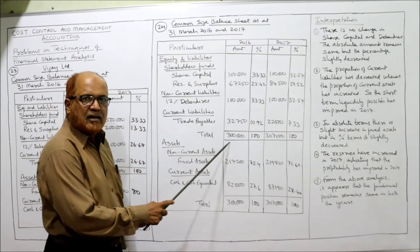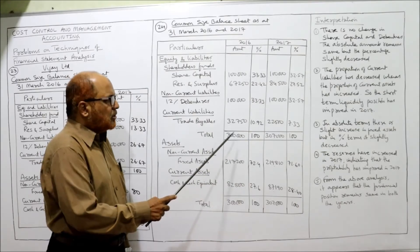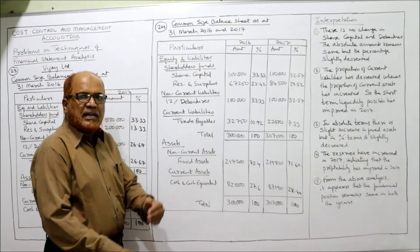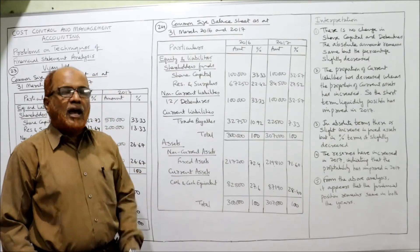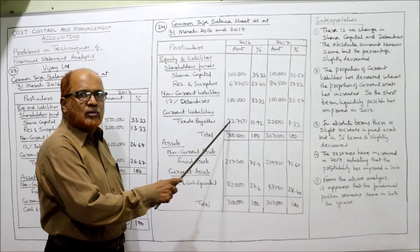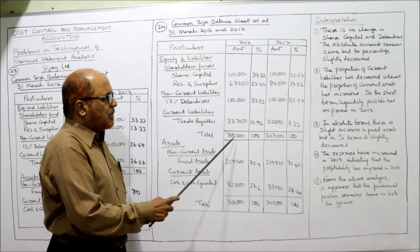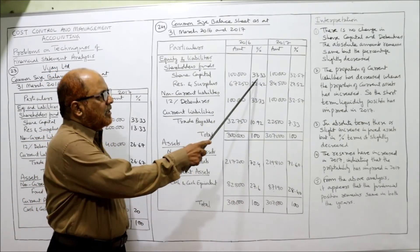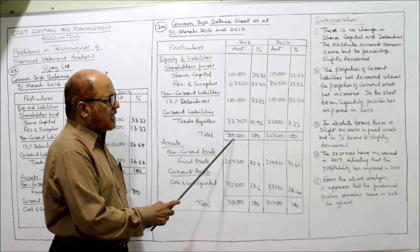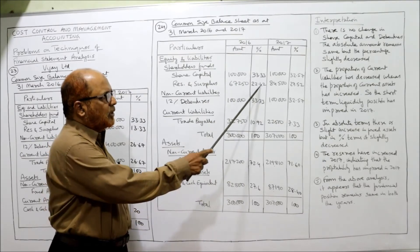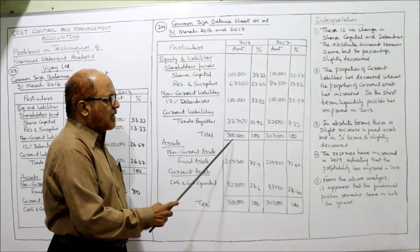This 3 lakh is 100%. Now 3 lakh will be taken as the denominator and you take all individual values in the numerator. So 1 lakh divided by 3 lakh into 100 = 33.33%; 67,250 divided by 3 lakh into 100 = 22.42%; then 1 lakh divided by 3 lakh = 33.33%.